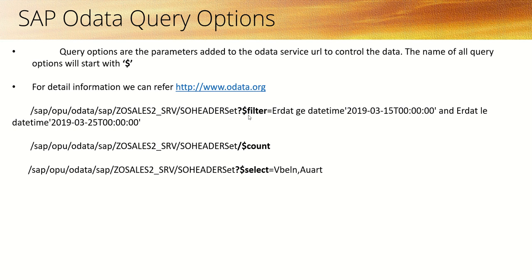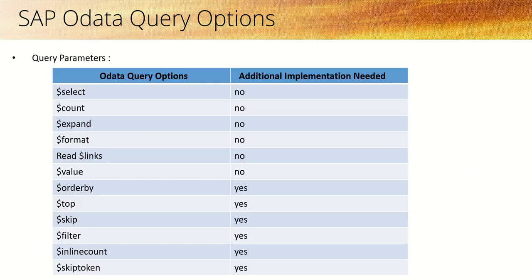Query options start with a dollar sign. For example, in the SO header entity set there are multiple records, but if we want to apply some filter on that for a date range or order type, we can make use of the query option $filter. There are many other query parameters available, and we can refer to odata.org for details. Some query parameters include $select and $count. On the left-hand side we can see the query options, and on the right-hand side it shows whether additional implementation is required or not.